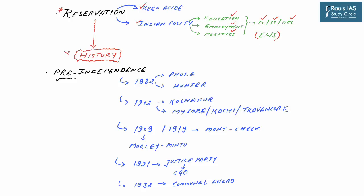Let us look into the historical background of reservation policy in India, divided into pre-independence and post-independence. The idea of reservation was first propounded by Jyotirao Phule and William Hunter in 1882. The first concrete step was taken by Rajarshi Shahu, the then Maharaja of Kolhapur princely state, when he introduced reservation for non-Brahmin and backward classes in 1902, soon followed by the princely states of Mysore, Kochi and Travancore.